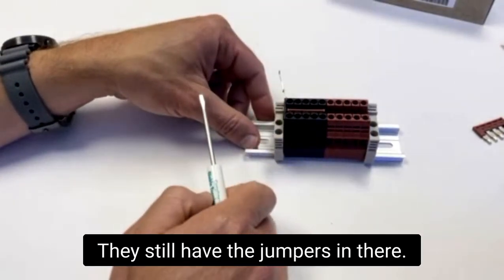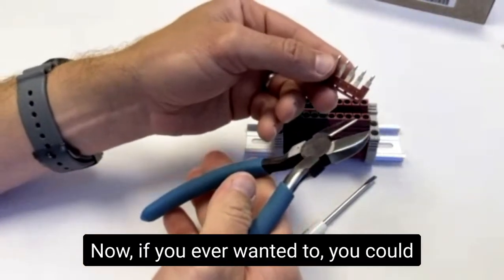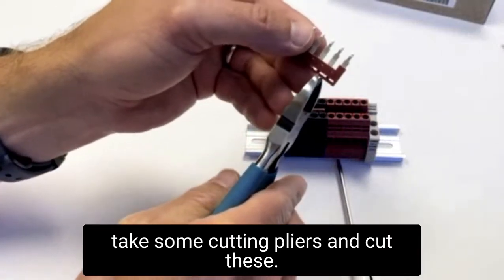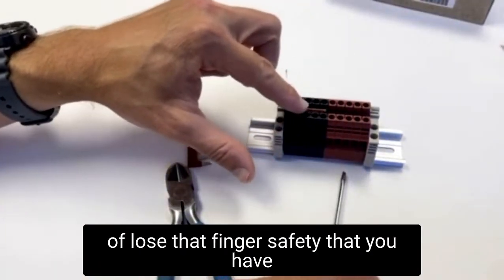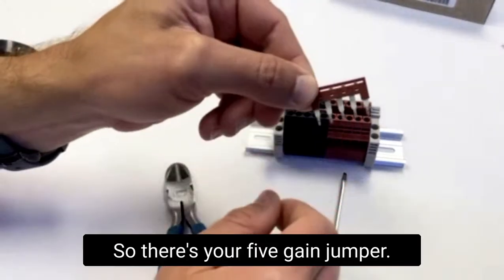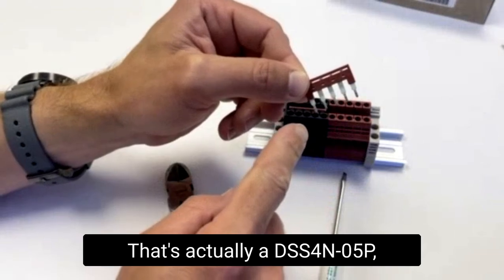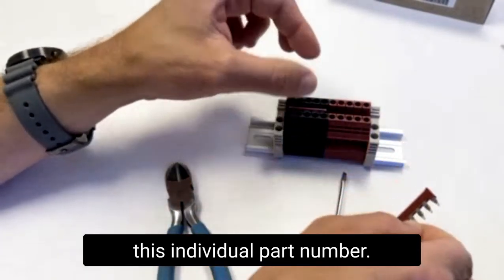Now if you ever wanted to, you could take some cutting pliers and cut these, but just keep in mind you kind of lose that finger safety that you have here with the fully insulated bar. So there's your five gang jumper, that's actually a DSS4N-05P, that's the individual part number.